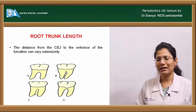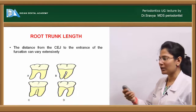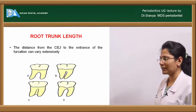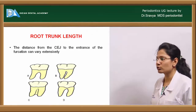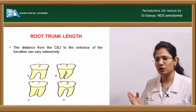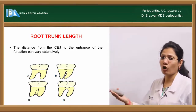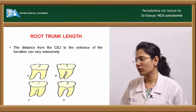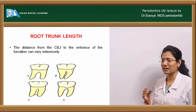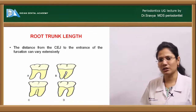The root trunk length is the distance from the CEJ to the entrance of the furcation, and as seen in the pictures, it varies in different situations. The first image shows the ideal root form. The second shows adequate root trunk length but very little divergence between the roots. Image C shows the furcation entrance almost at the apical portion, while image D shows very little root trunk length with the furcation entrance almost at the CEJ.